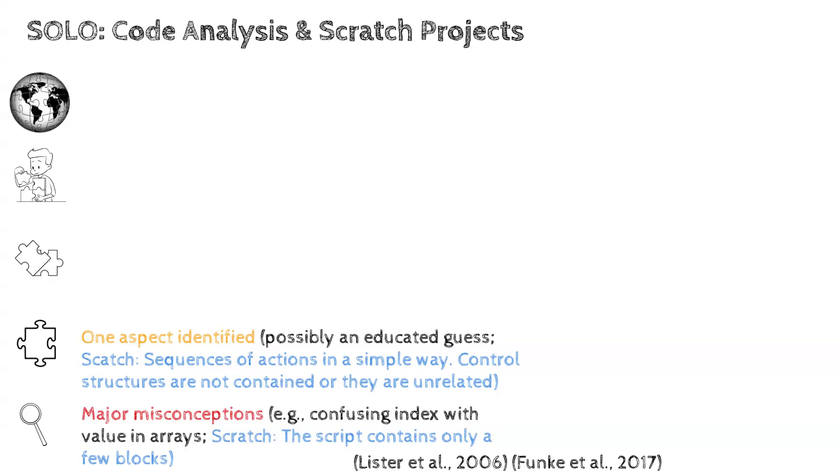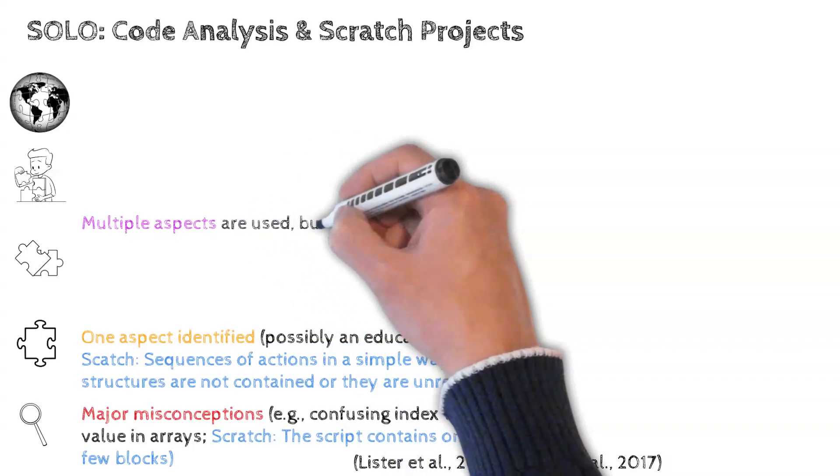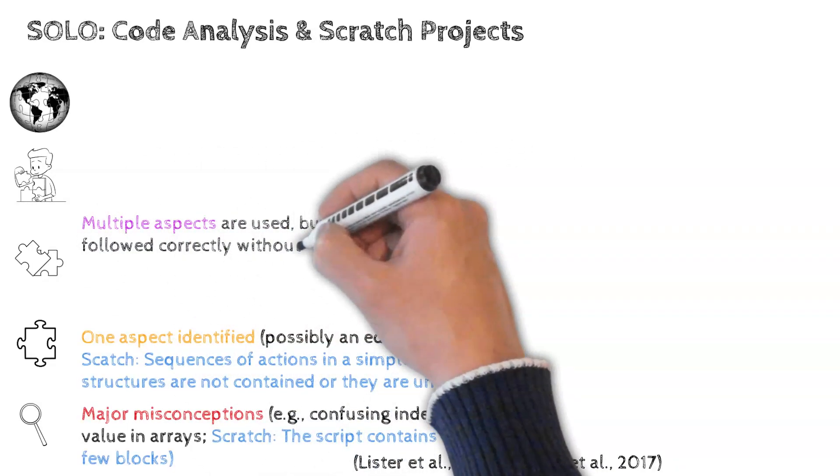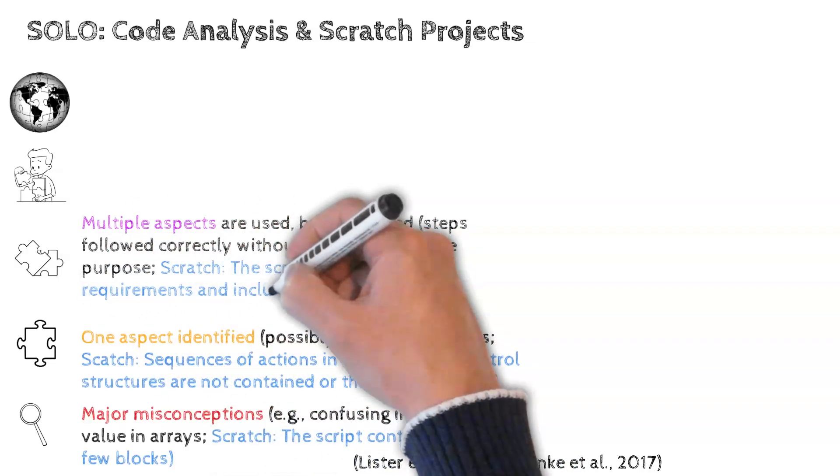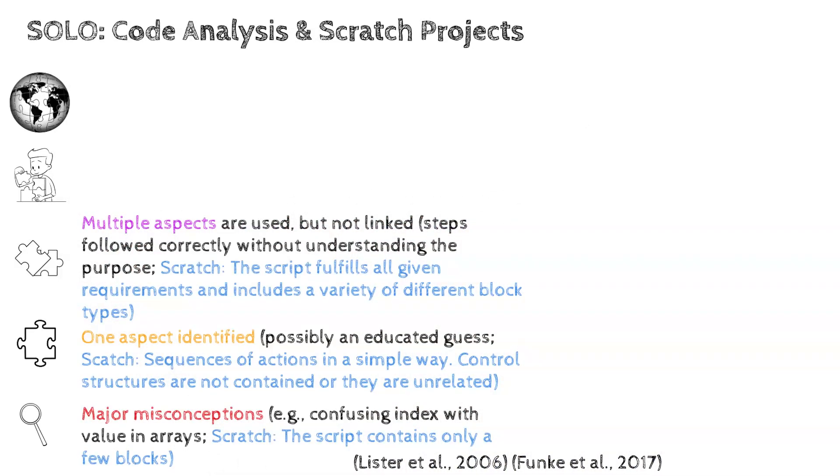At multistructural level, multiple aspects are identified but not linked. Regarding code reading, program steps are followed correctly without understanding the purpose of the whole program. Lister et al. call it the student fails to see the forest for the trees. Regarding Scratch, the script fulfills all given requirements and includes a variety of different block types. The code may have been reorganized to make a more integrated solution.